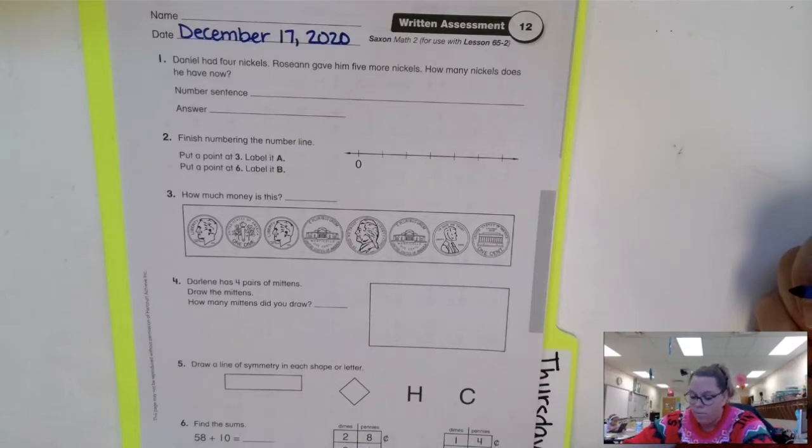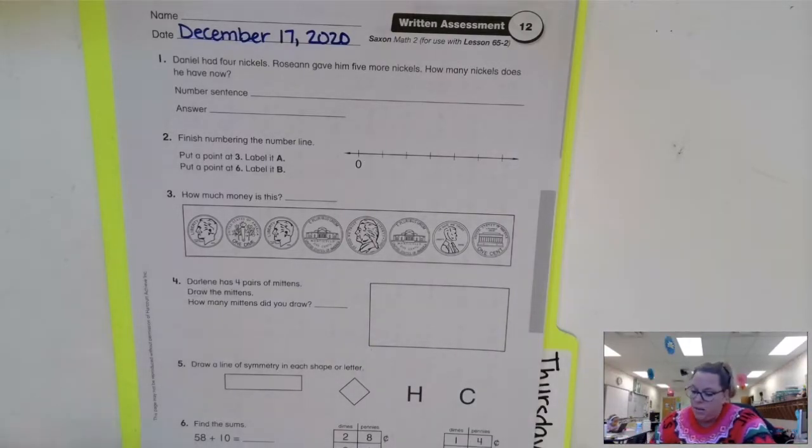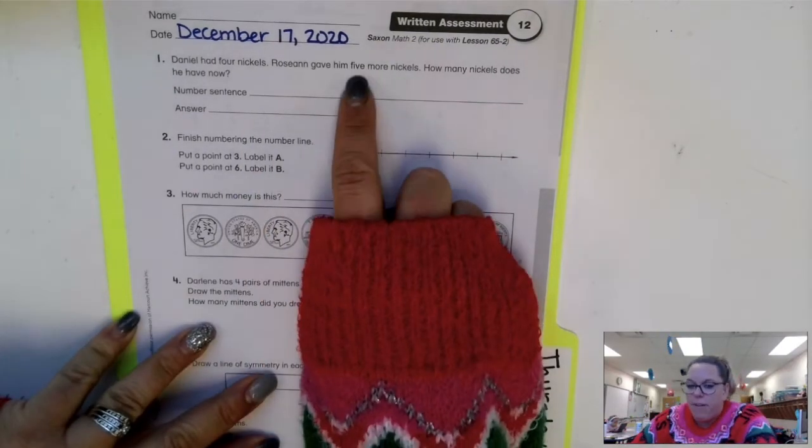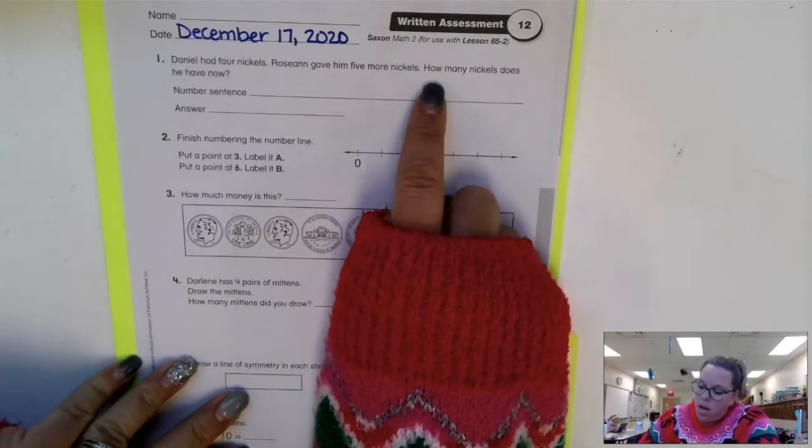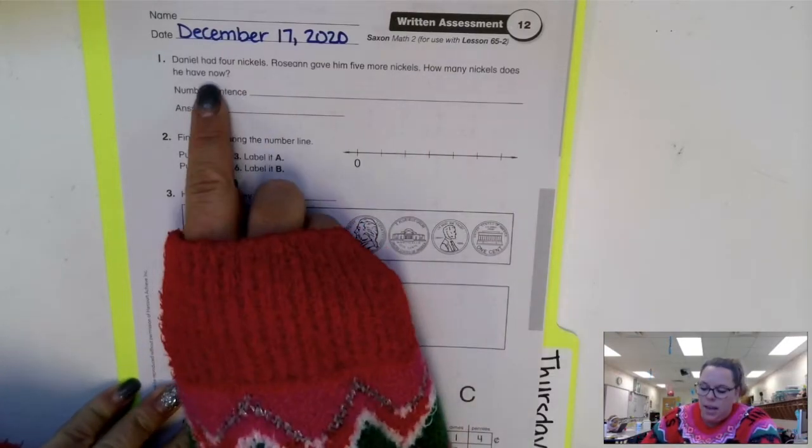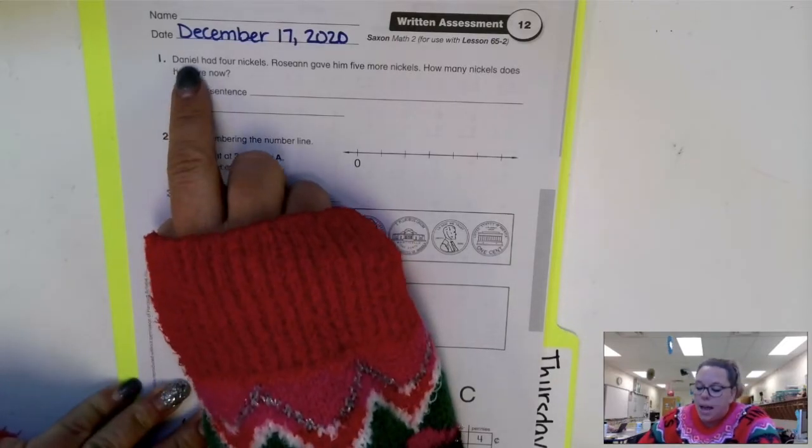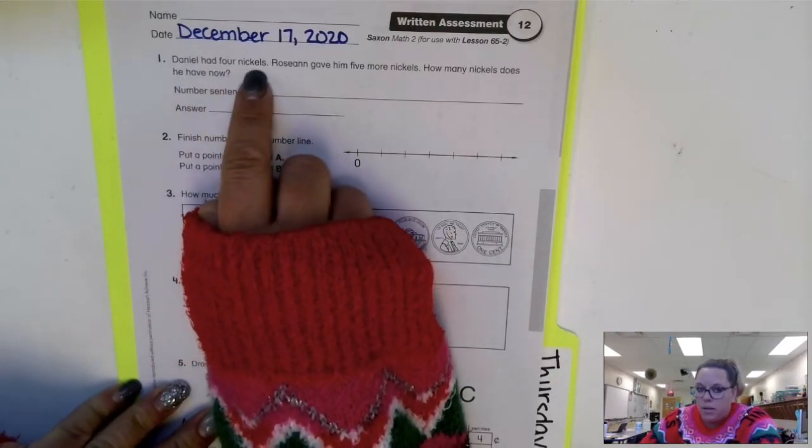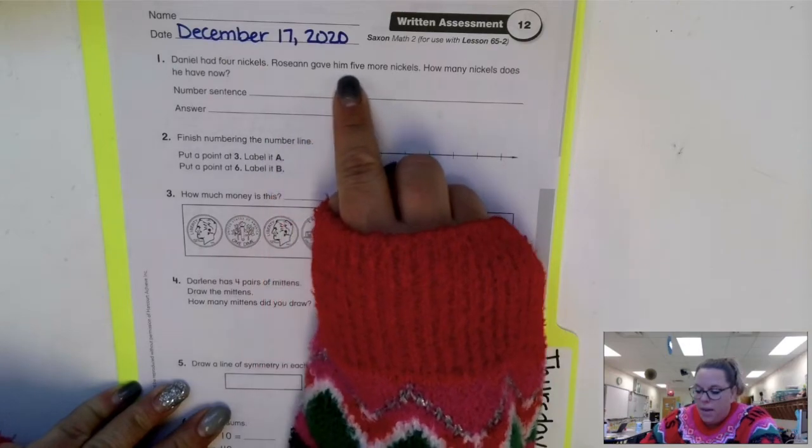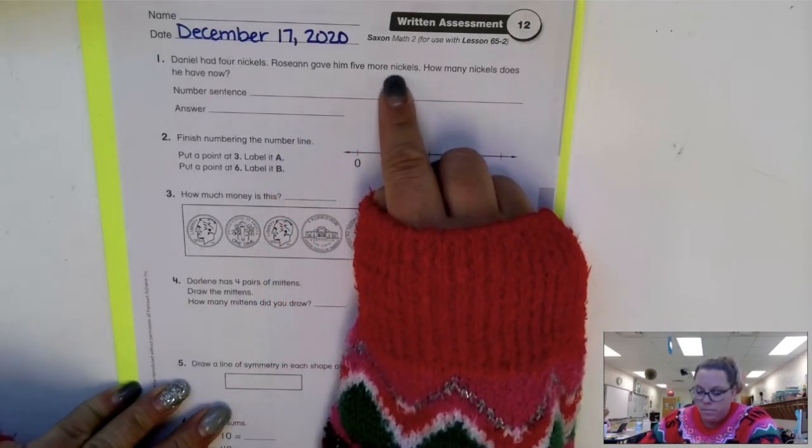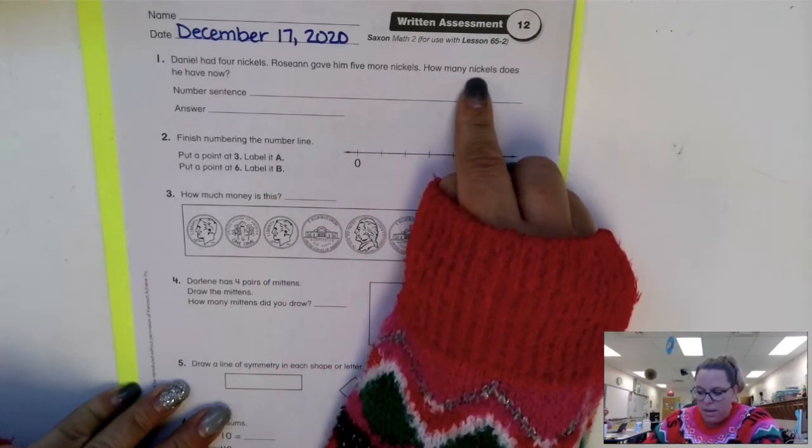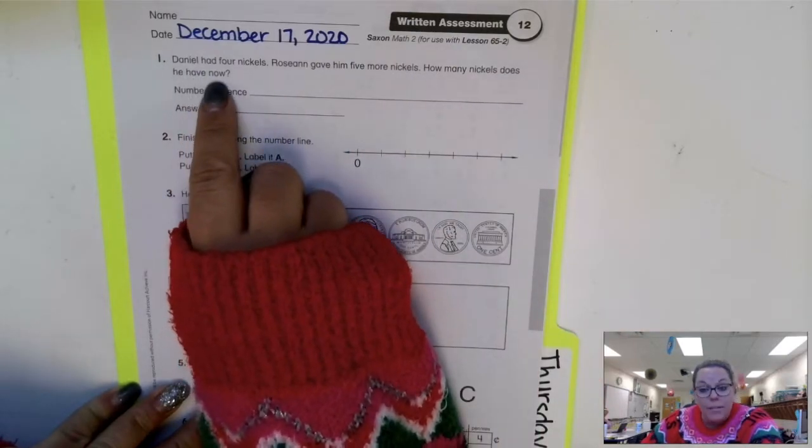Let's look at number one. It says, Daniel had four nickels. Roseanne gave him five more nickels. How many nickels does he have now? I'll read that one more time. Daniel had four nickels. Roseanne gave him five more nickels. How many nickels does he have now?